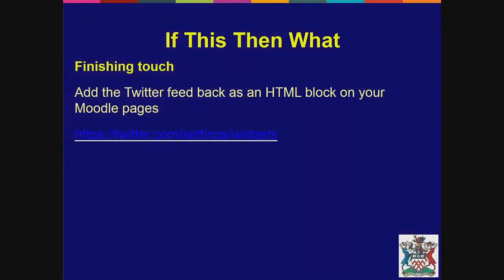And then there's the finishing touch. Of course, anything that goes out to Twitter — you can just get the Twitter feed, take the HTML block from Twitter, and put that back on your course. So it becomes a sort of circle: I've put something on the forum, it goes out to Twitter and WordPress and wherever else, and it comes back as a Twitter HTML block that just sits on the side of the course page as well.